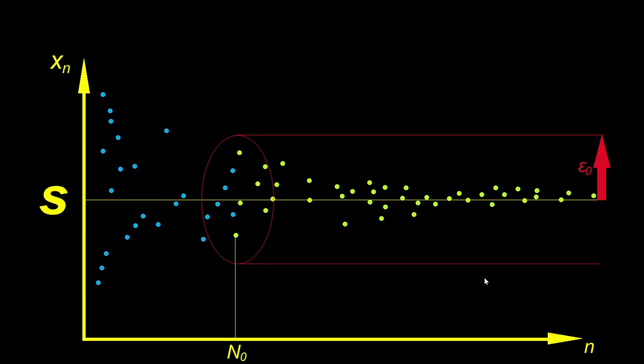And here is a schematic diagram for the definition of limits. So the numbers in the sequence xn are represented in the scatter plot. The horizontal line with height s is the limit of xn. The definition says, given any error tolerance represented by the positive number, epsilon naught, there exists a threshold, capital N naught, so that every point that comes after N naught falls within the tunnel with radius epsilon naught in this diagram. And all those points are painted as green dots.